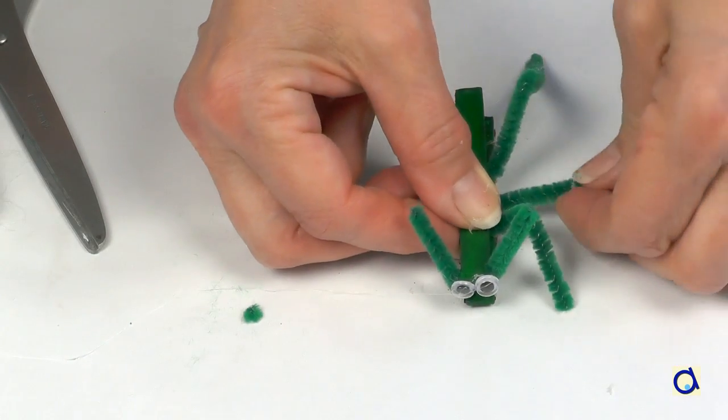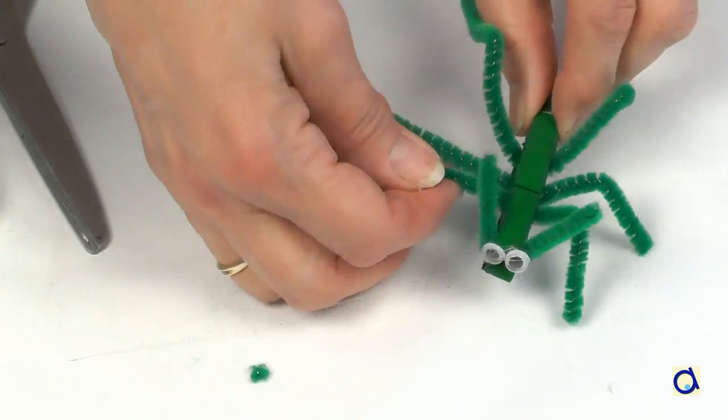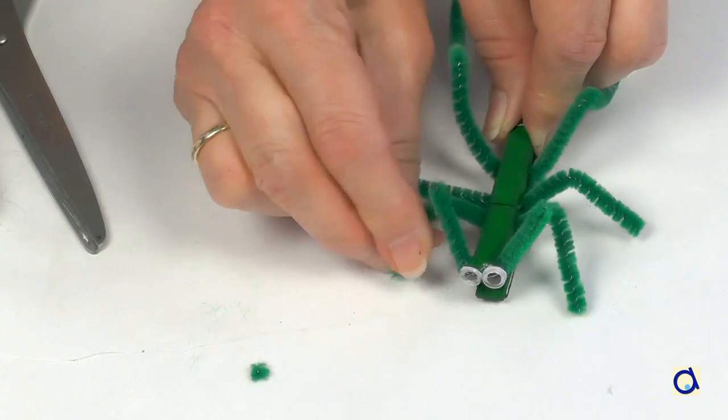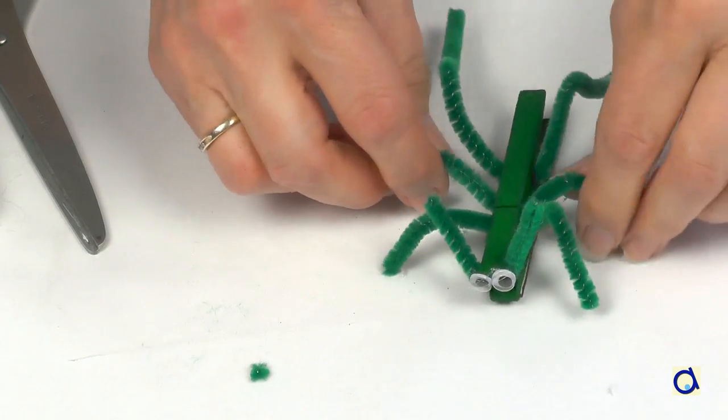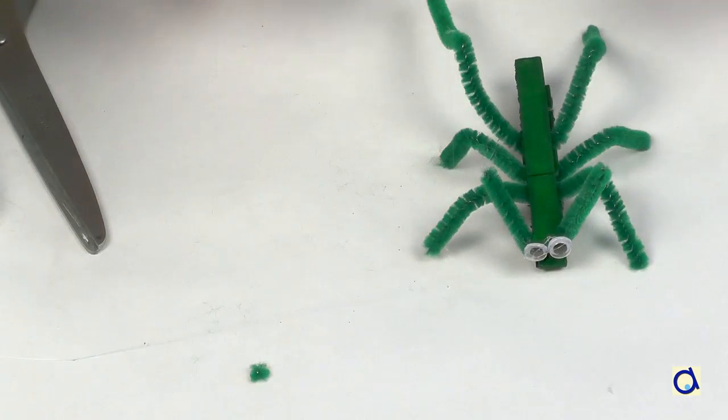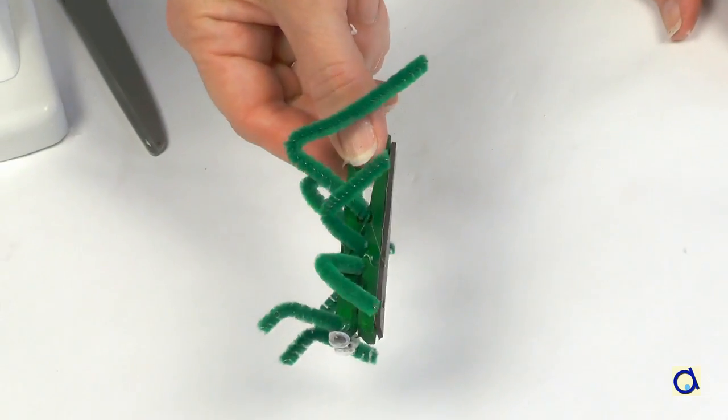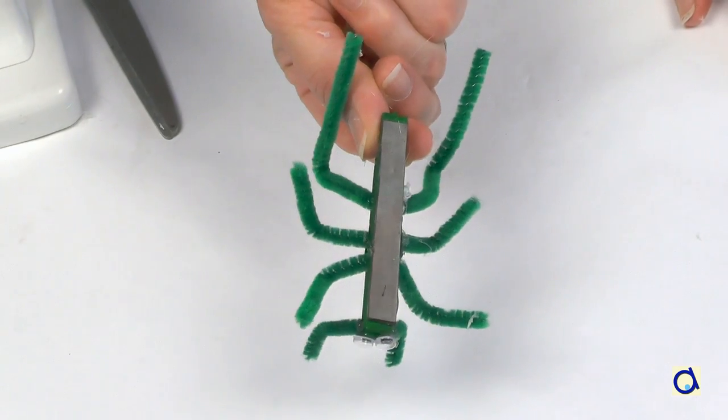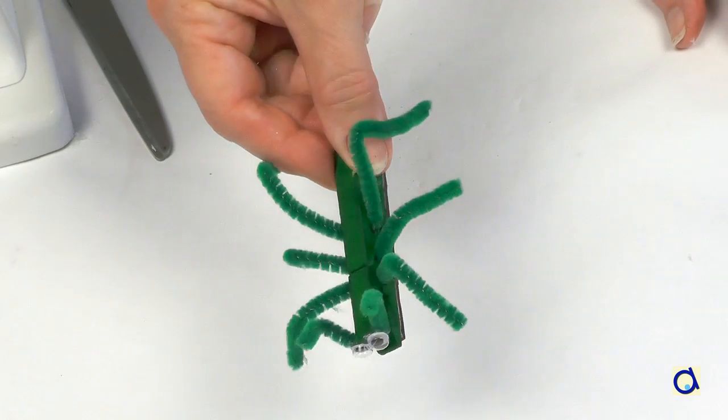Fold the two pairs of legs and turn the front legs forward while the middle legs are turned backwards. Bend the antennas of the grasshopper forward. And here is your grasshopper magnet ready to hop on the fridge!